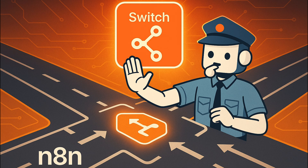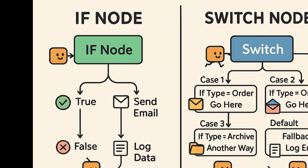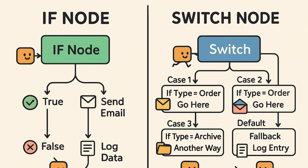Think of the switch node as a traffic director that can send your data down one of many different roads, depending on the content of the data. It is similar to an if node, but instead of just two outcomes — true or false — a switch node can have several possible outputs like case one, case two, case three, etc., plus a default fallback.